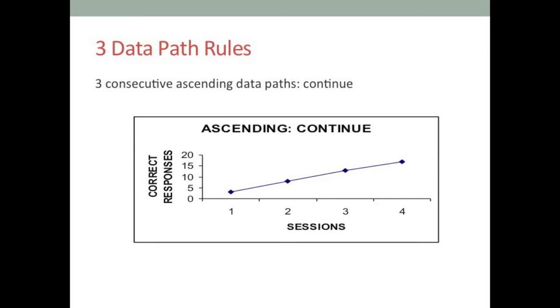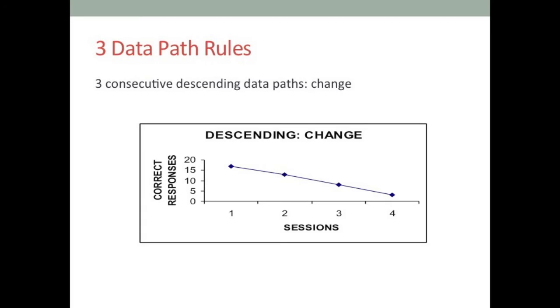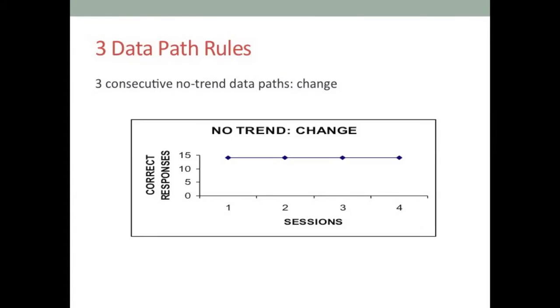When three stable data paths are descending — down, down, down — the student is not learning, so we make a decision to change. If the data path is flat — a no-trend path — we also make a decision to change. When we change, it doesn't mean abandoning the program completely. We think about what is not working and figure out how to make it better. For example, if the student doesn't like the stickers used as reinforcers, we change the reinforcer — sometimes that simple.